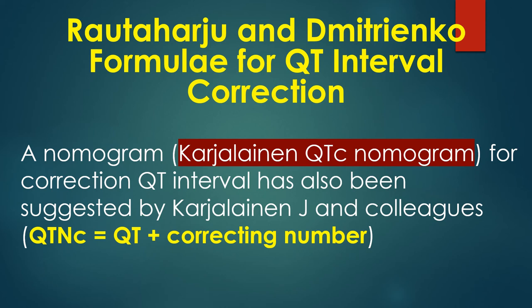A normogram known as the Cardinalin QTC normogram for correction of QT interval has also been suggested by Cardinalin and colleagues, in which QTNC is equal to QT plus a correcting number.